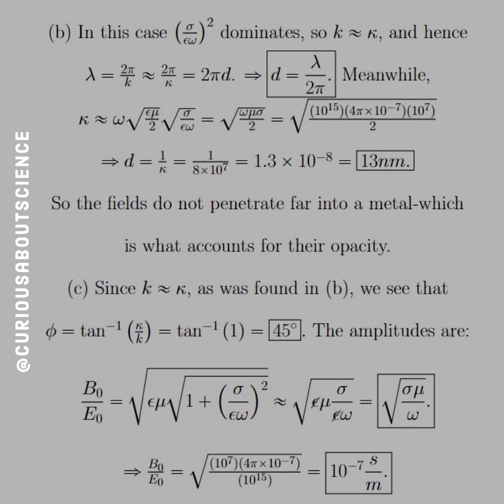since k is approximately equal to kappa, as was found in B, thanks to the domination term, we see that phi is equal to tan inverse kappa over k. And since they're approximately equal, they go to 1, which is equal to tan inverse of 1 is 45 degrees, again, principal roots only.